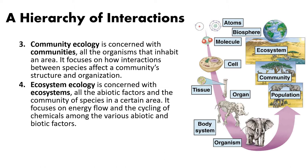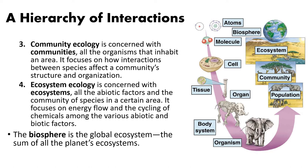The highest level we'll discuss today is the ecosystem level, which encompasses all abiotic factors and the community of species in a certain area, with special emphasis on how energy and chemicals cycle through the system. We look at what organisms are present, where the water and nutrients are, how they're recycled, and what decomposers are doing. The biosphere — which we won't focus on today — is the global ecosystem: the sum of every single ecosystem on the planet.